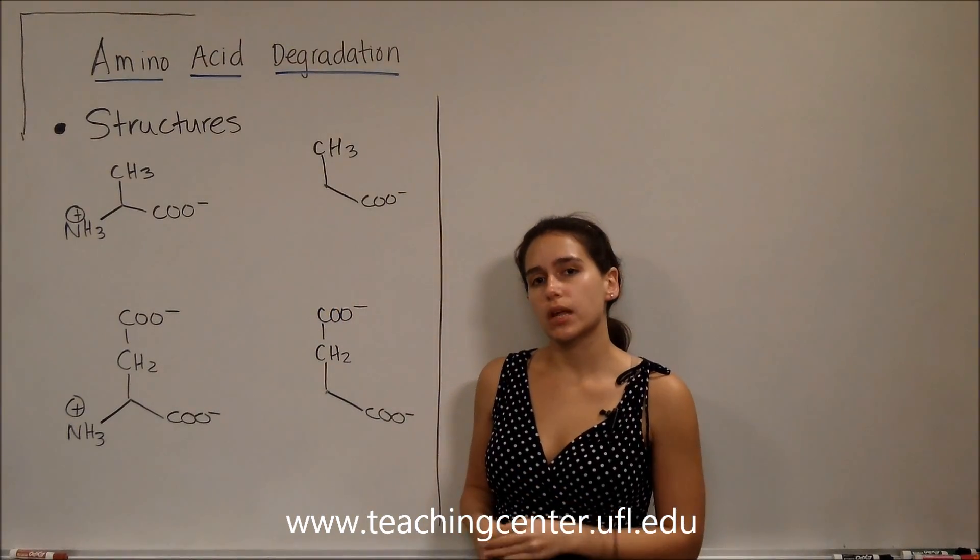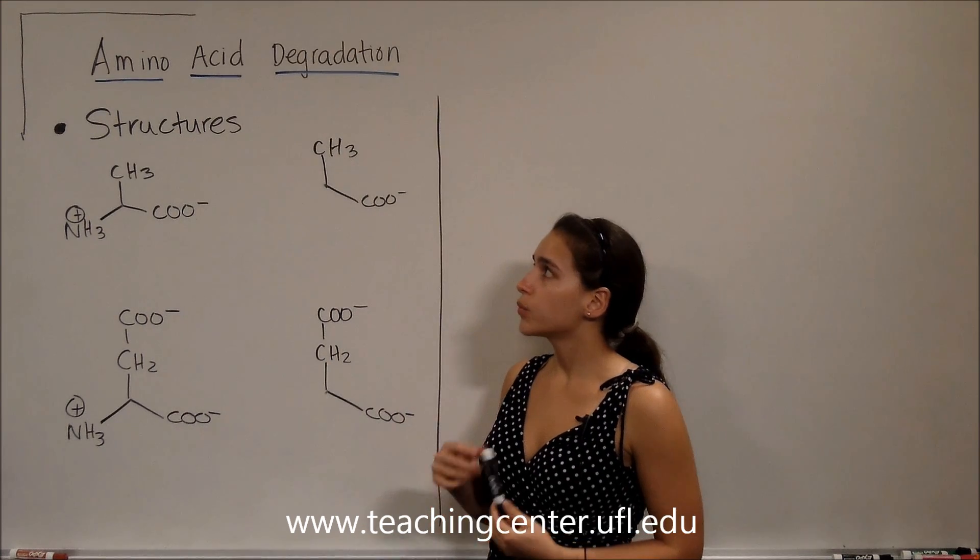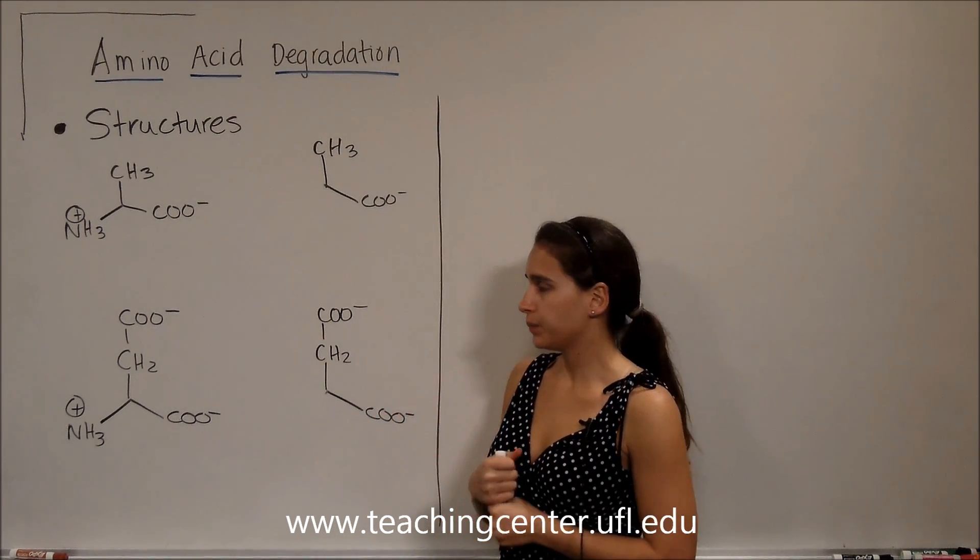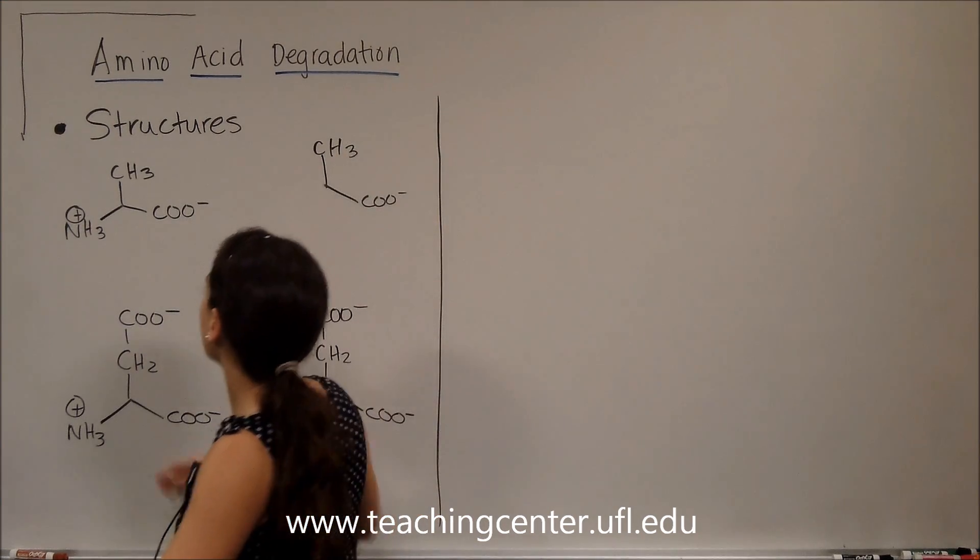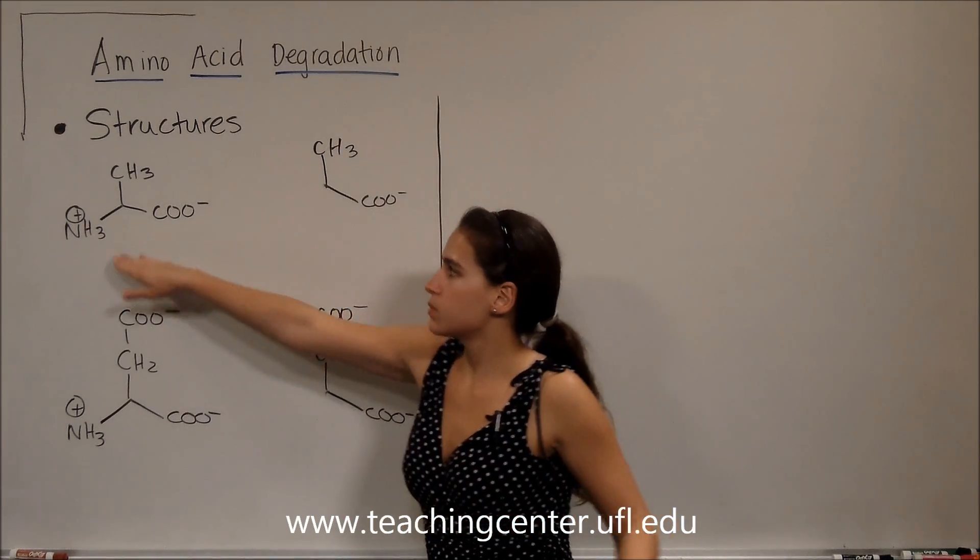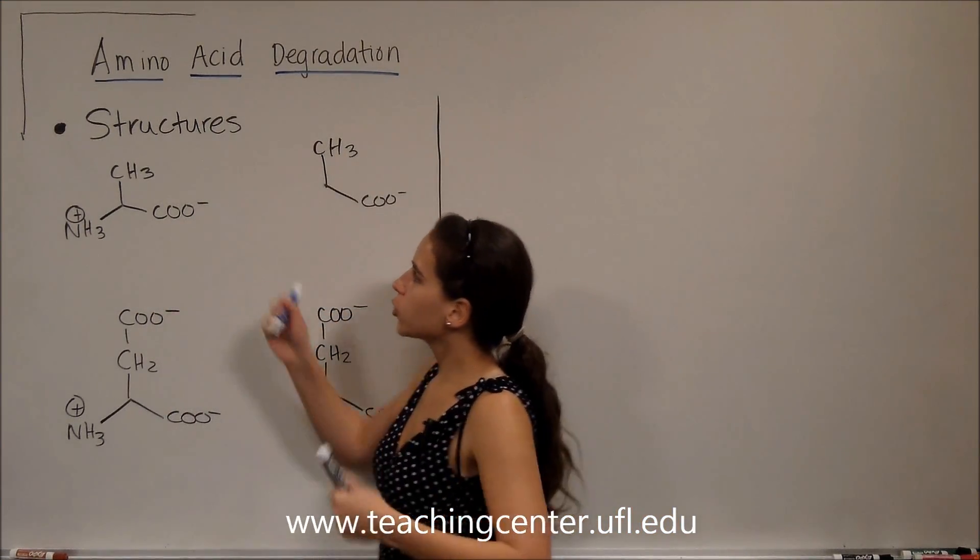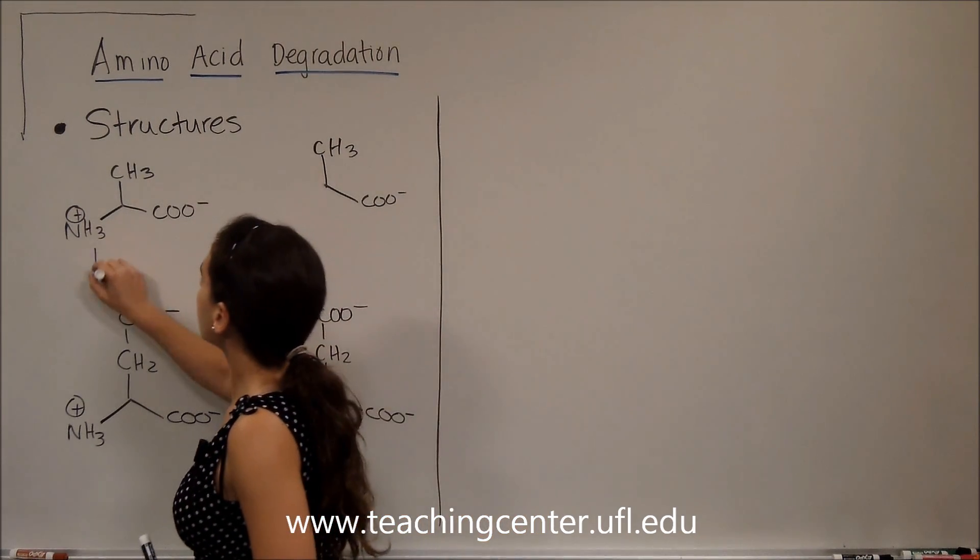So there's a few structures that I think are important when talking about amino acid degradation. Let's look at a few of them. First, over here, we have an amino acid. Because of the R group being a methyl group, we know that's alanine.